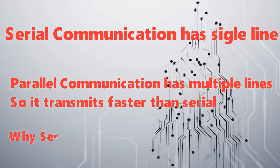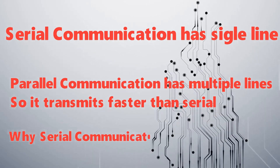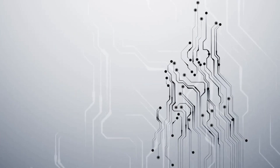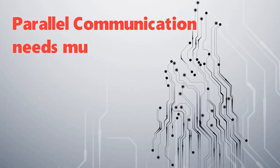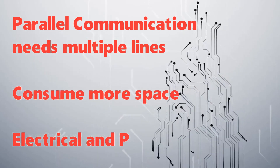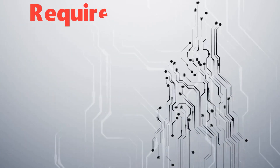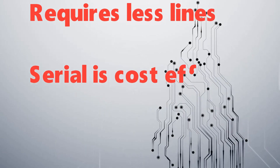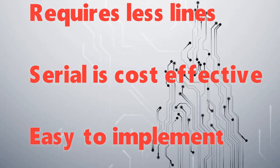Now you may ask: why is serial communication used? Parallel communication has some disadvantages as it has multiple lines, so it requires more space due to electrical and physical constraints. Serial has advantages like fewer lines, being cost effective, and easy to implement.